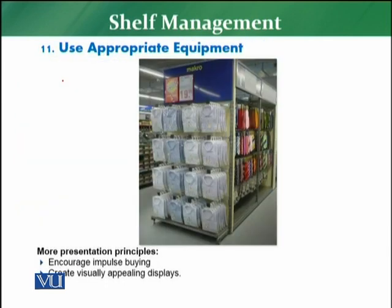The eleventh principle is about using appropriate equipment. For a mass display, the product should be on pallets. For displaying shirts, there need to be proper hangers. For displaying LEDs or televisions, there should be a proper wall mount bracket as equipment. All products normally have some requirement related to equipment.